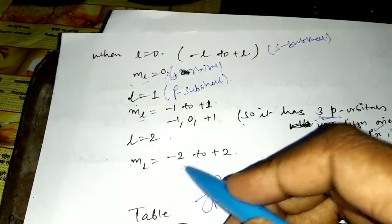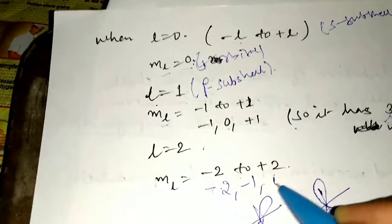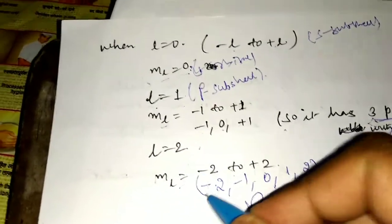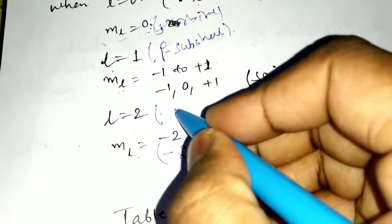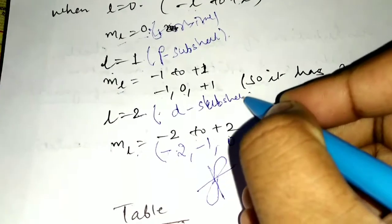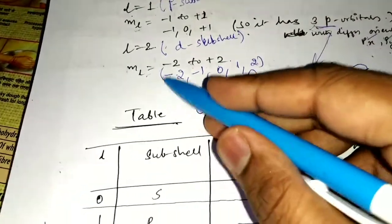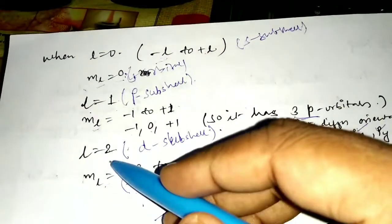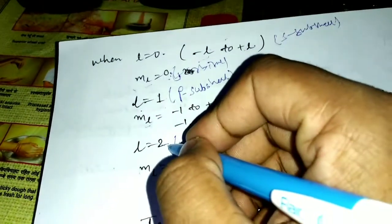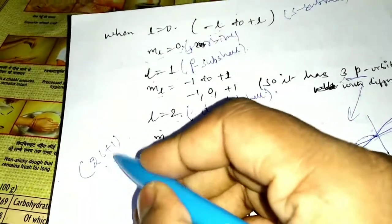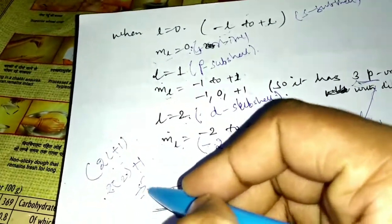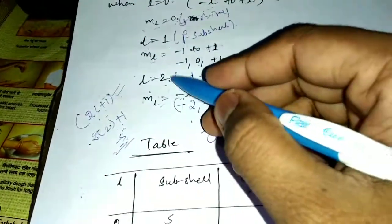You can increase the value of L to find the ML values. A useful shortcut to find how many orbitals a subshell has is the formula 2L+1. For example, when L=2: 2×2+1=5, so D has 5 orbitals. For the F subshell, L=3: 2×3+1=7, so F has 7 orbitals.